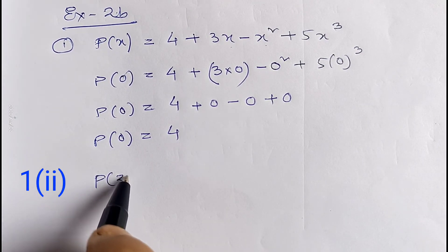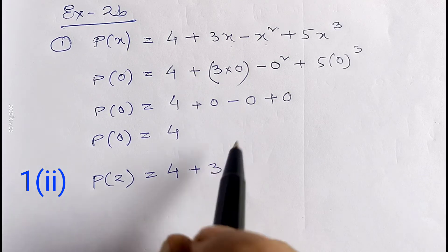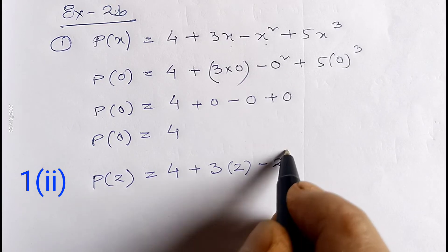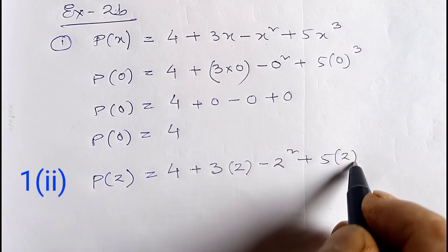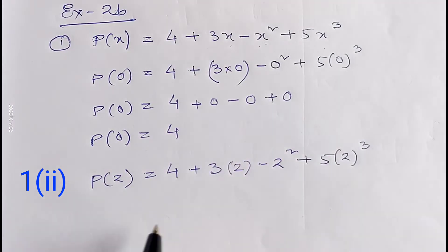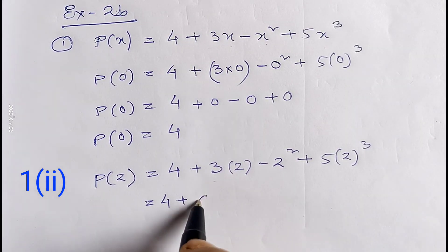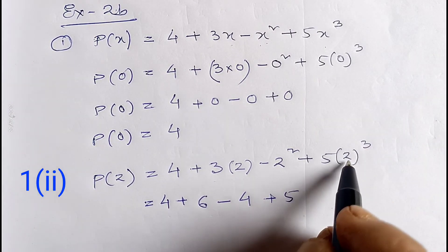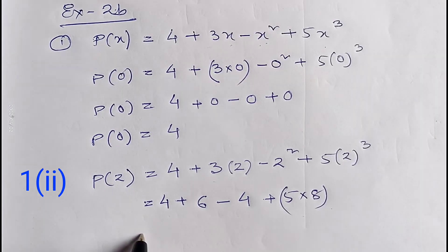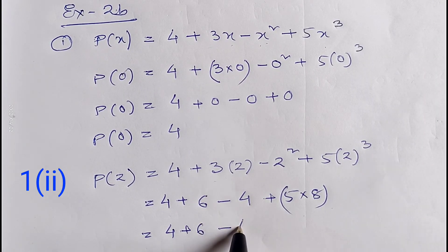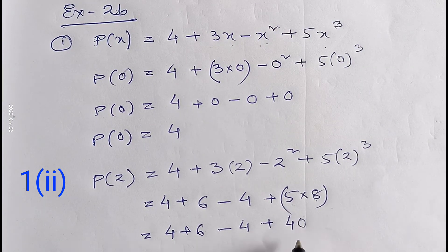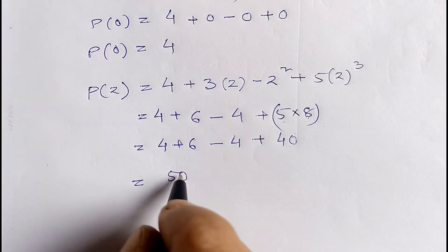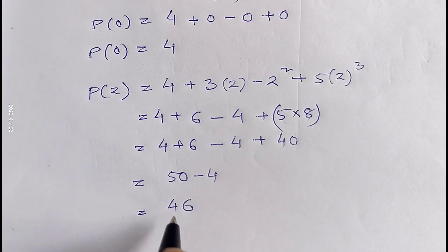For p(2) we replace x by 2, so it will be 4 plus 3 into 2 minus 2² plus 5 into 2³. That gives 4 plus 6 minus 4 plus 5 into 8, which is 4 plus 6 minus 4 plus 40. Four plus six is ten, ten plus forty is fifty, so fifty minus four equals 46.